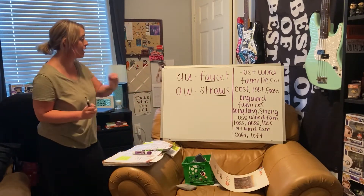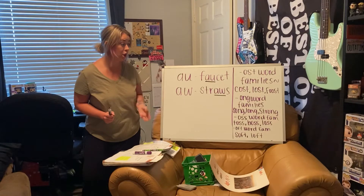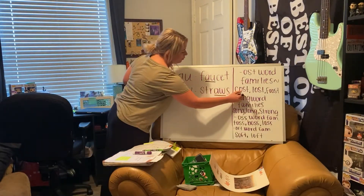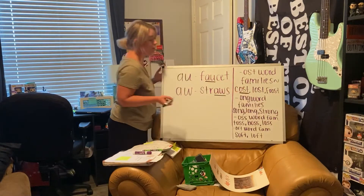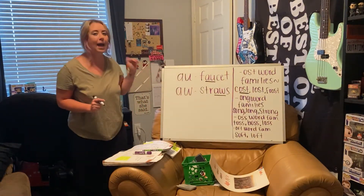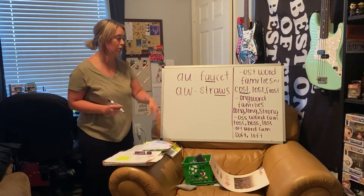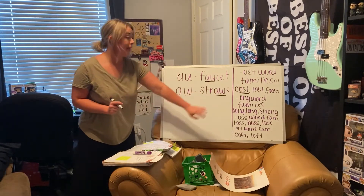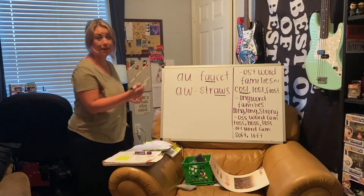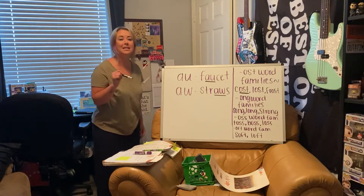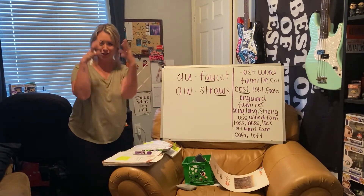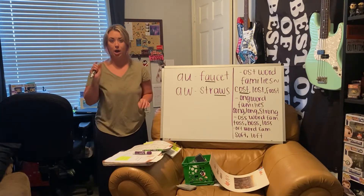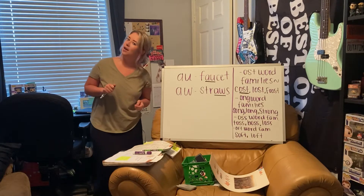We have the OST word family. For example: cost, lost, and frost. That OST sound in those words says the same AU/AW sound. Repeat them after me: cost, lost, and frost. Pay special attention to the word 'frost' — it has a blend at the beginning. FR — squish them together and you get FR plus OST. FR plus OST equals frost. If you said frost, you are correct.